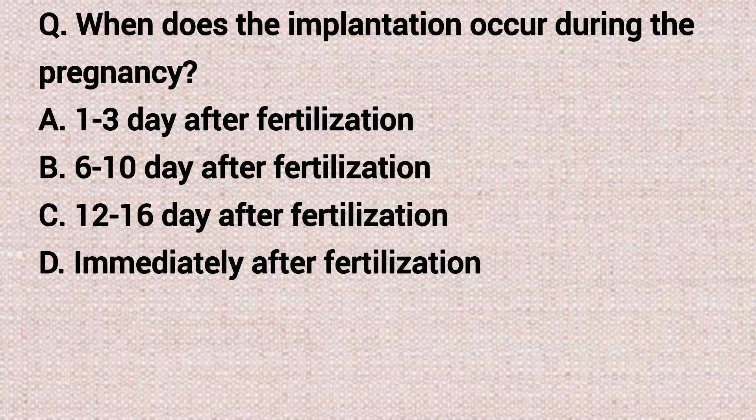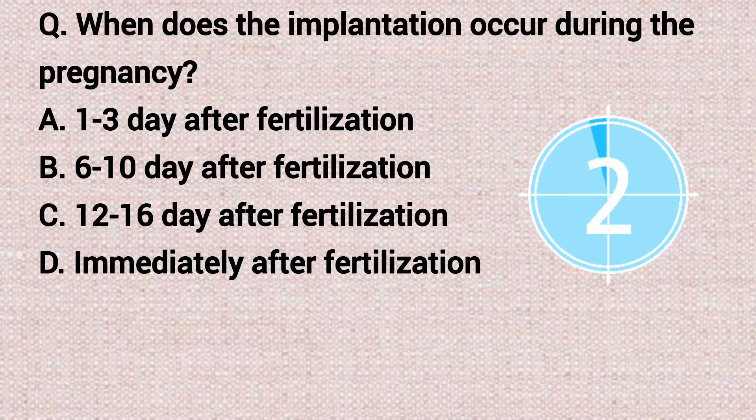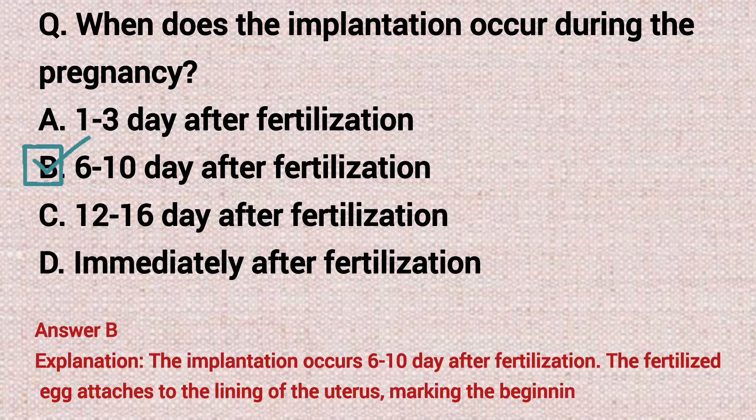The next question: when does implantation occur during pregnancy? Option A: 1 to 3rd day after fertilization. Option B: 6 to 10th day after fertilization. Option C: 12 to 16th day after fertilization. Option D: immediately after fertilization. The correct answer is option B, 6 to 10th day after fertilization.